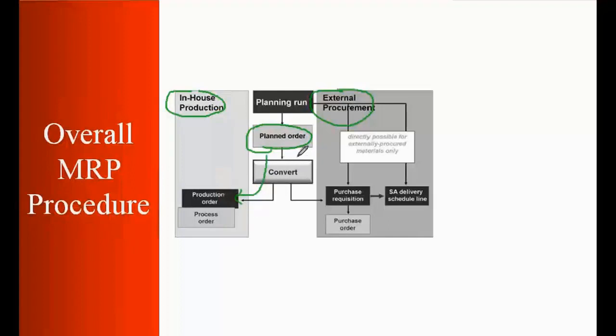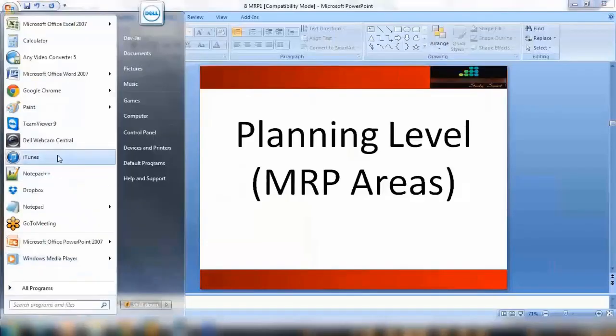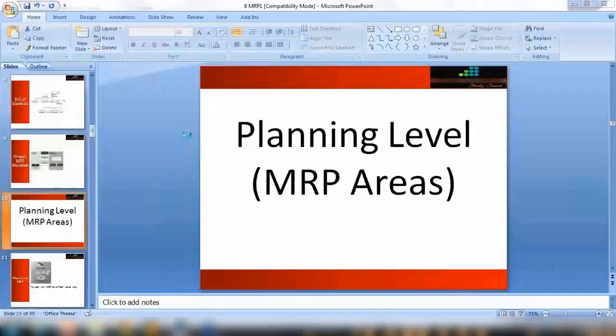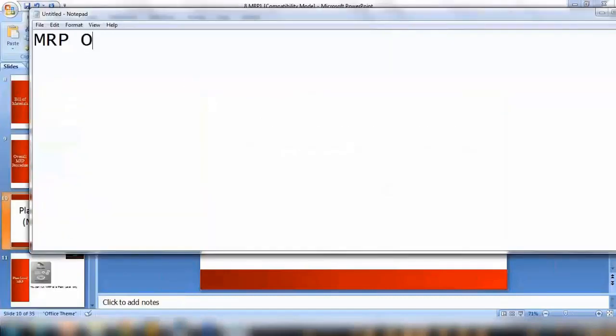And if it is external procurement - this is internal manufacturing or internal procurement, and on the right-hand side you have external. If it is external, the system will automatically again create a planned order, and it can then be converted to a purchase requisition. This is one example. Another example which is most commonly used - what will happen is the MRP overall procedure.